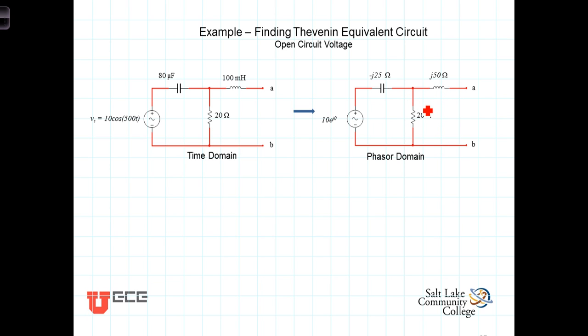To do so, we need the open circuit voltage. The open circuit voltage is the voltage that we would measure across the terminals with no load connected. Because there's no load connected, there's no current flowing through that inductor. And any current that's produced by this voltage source will be going through a series combination of the capacitor and the resistor. So the open circuit voltage is simply going to be the voltage across this 20 ohm resistor.